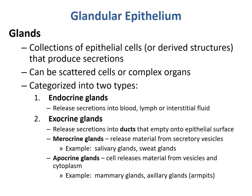The final type of epithelial tissue is glandular epithelium. This can look like any of the others, but they are specialized collections of epithelial cells designed to produce secretions. They can be scattered cells or complex organs, and come in two major types: endocrine and exocrine. Endocrine glands release secretions into the blood, lymph, or interstitial fluid, and are often known as hormones. Exocrine glands release secretions into ducts that empty onto the epithelial surface, including merocrine glands such as salivary and sweat glands, and apocrine glands such as mammary and axillary glands.